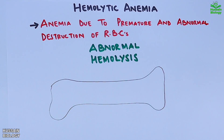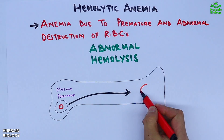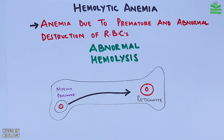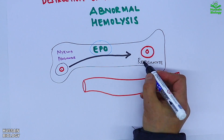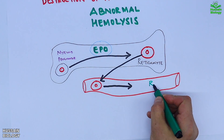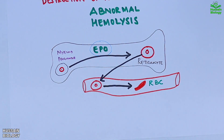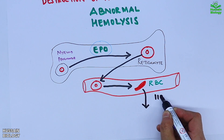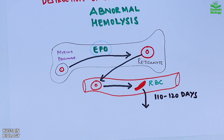In this diagram we have the bone marrow where the myeloid progenitors transform into reticulocytes via erythropoiesis, which is stimulated by EPO hormone. This reticulocyte then enters the circulation where it matures into RBCs. We know this RBC has a lifespan of 110 to 120 days, after which it dies off — this is the normal destruction of RBCs after its complete lifespan.